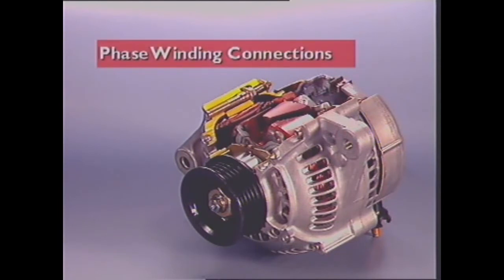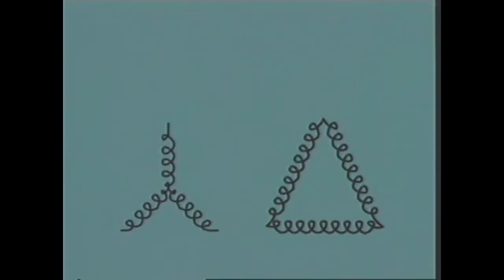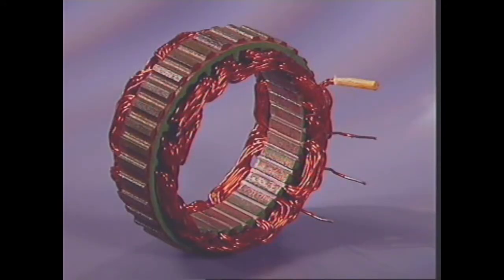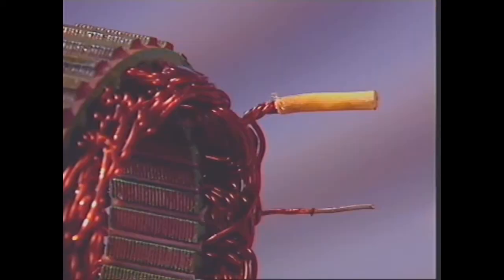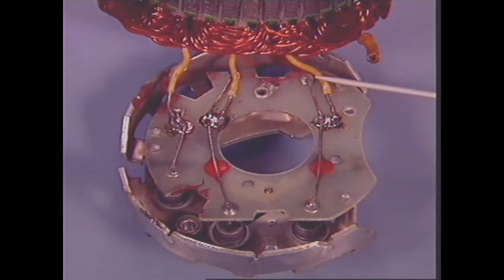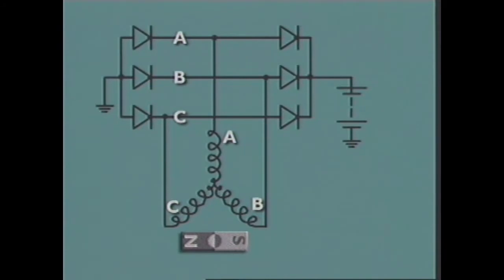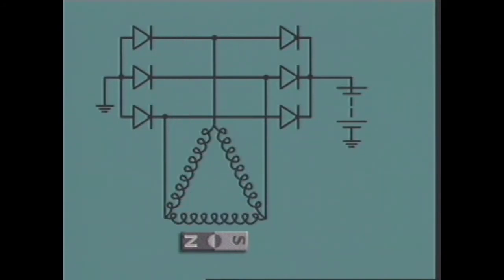This section examines connections of the phase windings. Two methods of connection can be used for the stator or phase windings: star or Y connection, and delta connection. In the star method of connection, one end of each phase winding is taken to a central point where they are connected together. This is known as the star or neutral point. The other end of each winding is connected in the bridge rectifier circuit between a positive and a negative diode. Each winding is then always part of a complete circuit. In the delta method, the windings are connected in the shape of a triangle and connections are taken from each point of the triangle to the bridge circuit.